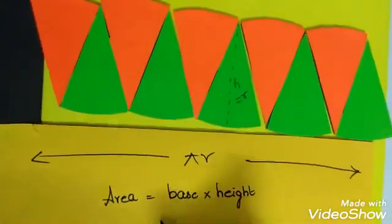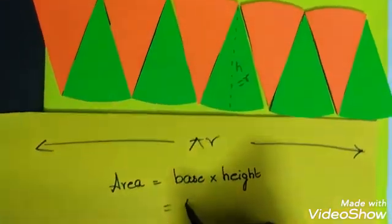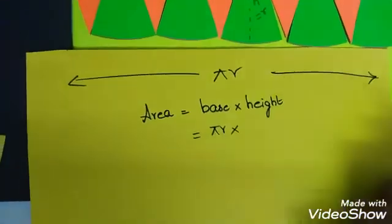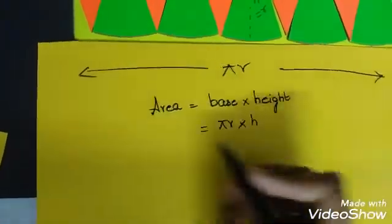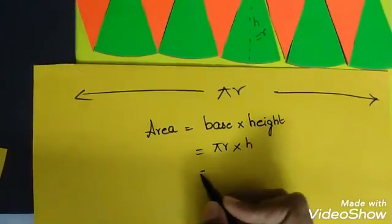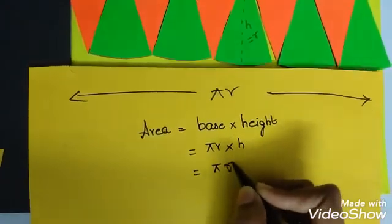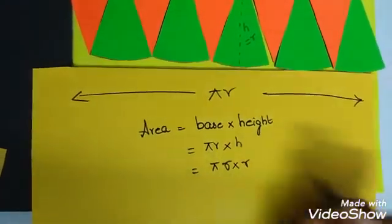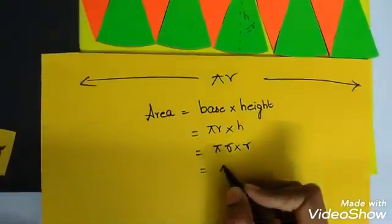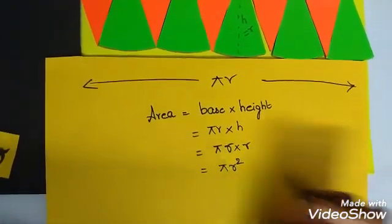Now the base is pi r into height is h where h is equal to r. So pi r into r. So now pi r square.